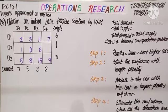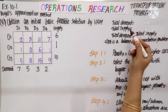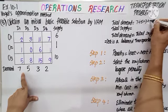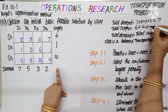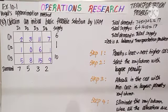Question number 8 — Vogel's Approximation Method. Obtain an Initial Basic Feasible Solution by VAM. Before applying the method, let us ensure total demand and total supply are equal. Total demand: 7 plus 5 plus 3 plus 2 is 17. Total supply: 6 plus 1 plus 10 is also 17. They are equal, so it is a balanced transportation problem.